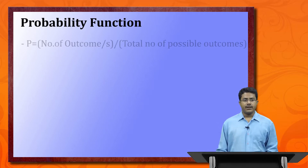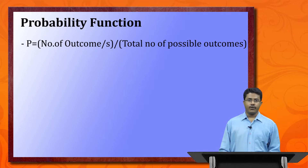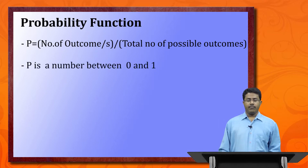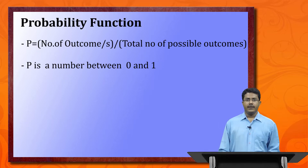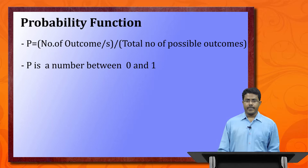The probability function is: P equals number of outcomes divided by the total number of possible outcomes. P is a number between 0 and 1. Let us take an example and try to calculate the probability function.